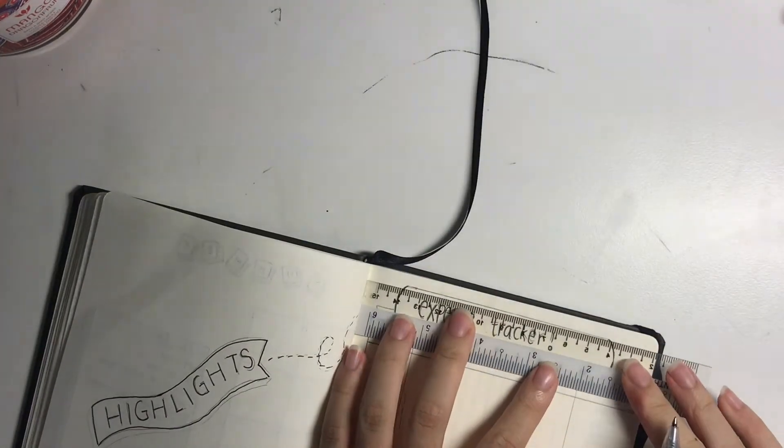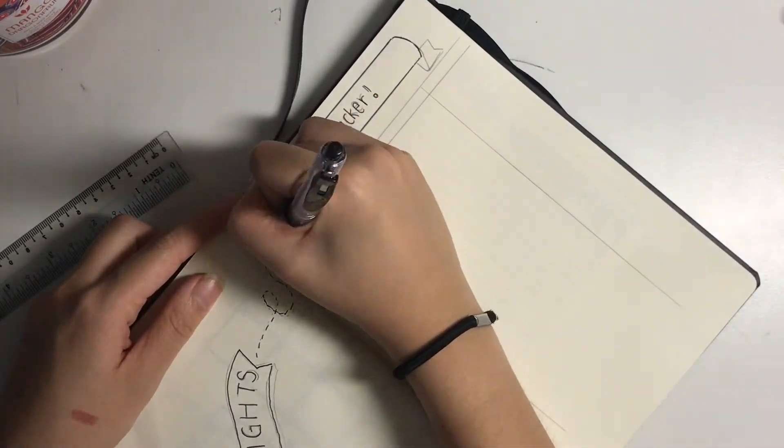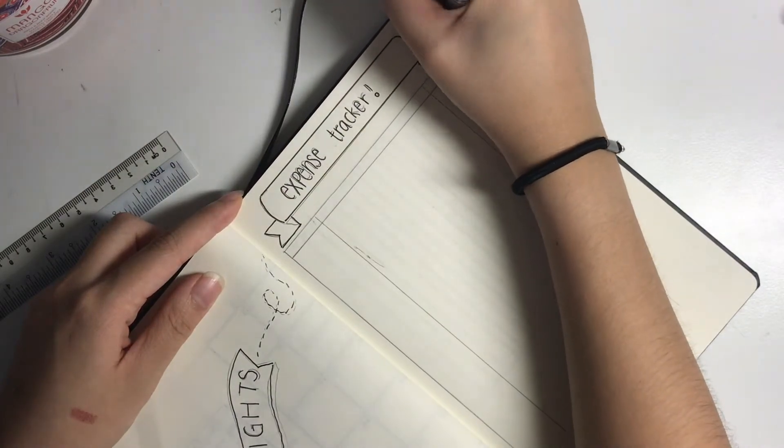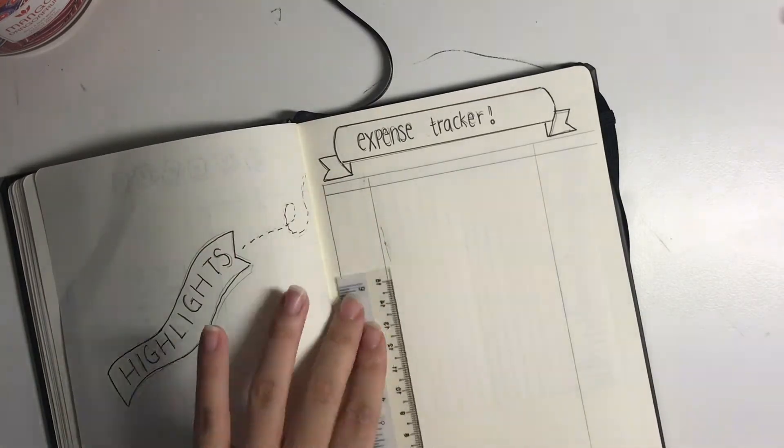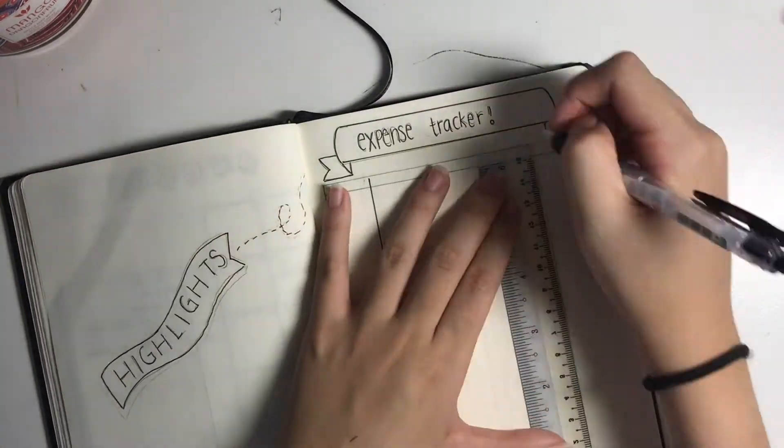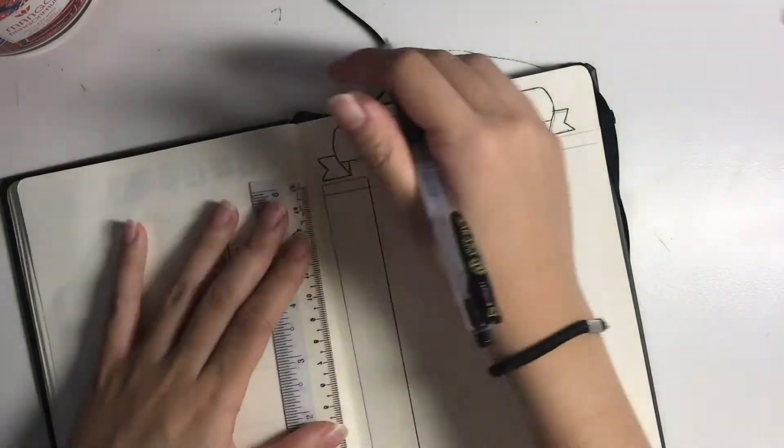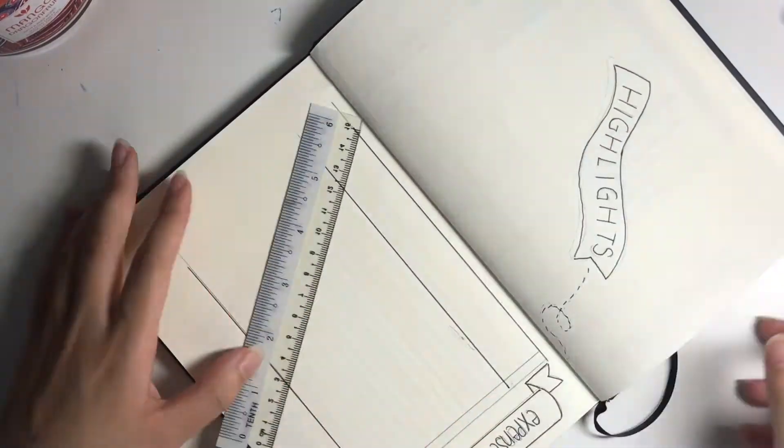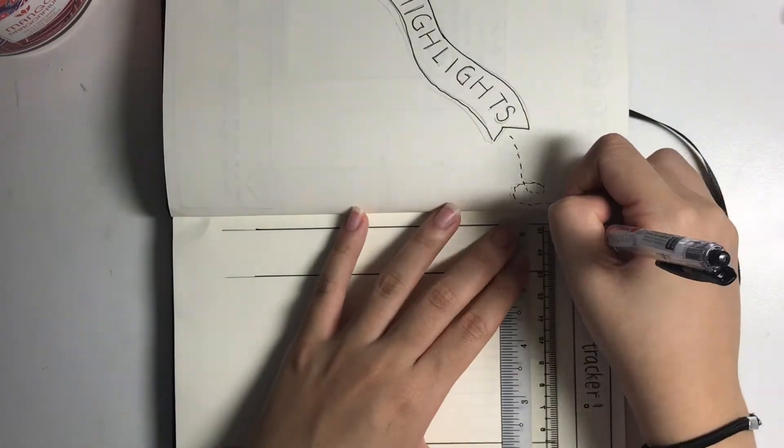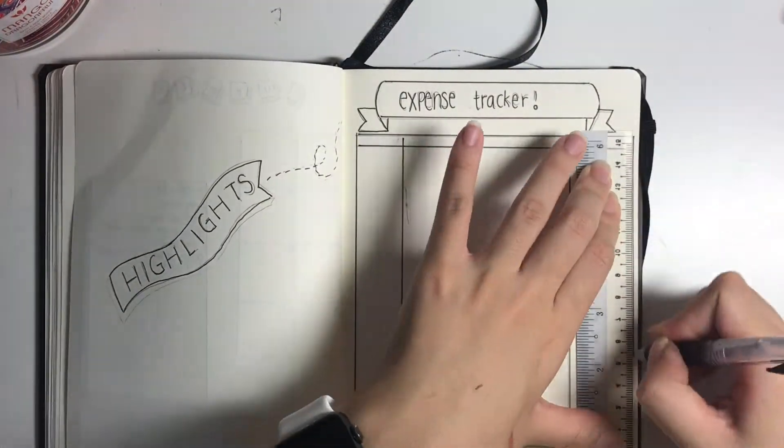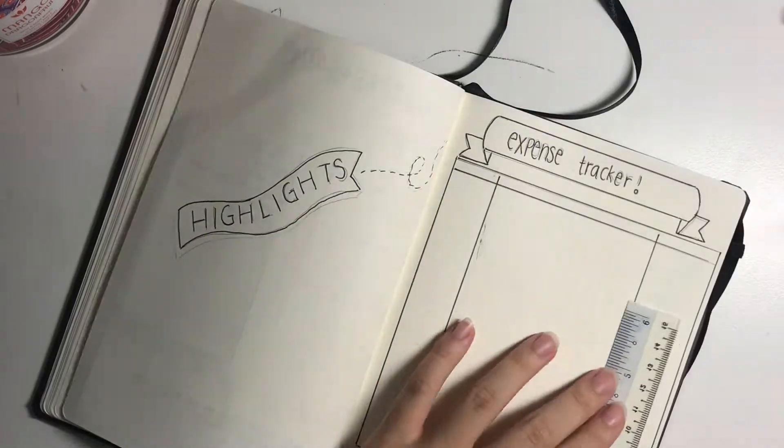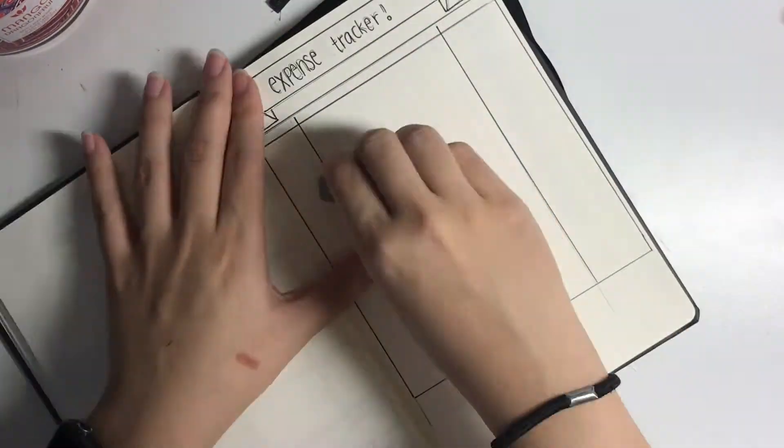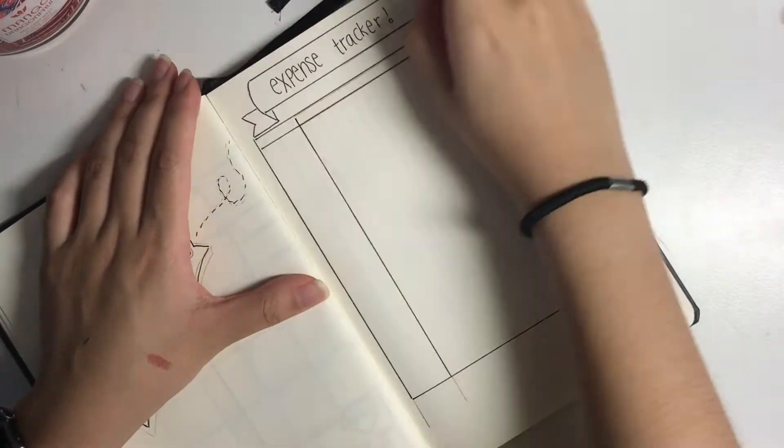On the page next to it I did my expense tracker. I need an expense tracker for my financial goals. I find my expense tracker works really well for me. Basically what I do is I add my date in one column, my description in the middle column which is what I bought, and the amount on the last column. I didn't actually write these yet. I only wrote them in after I shaded the back of the headers.